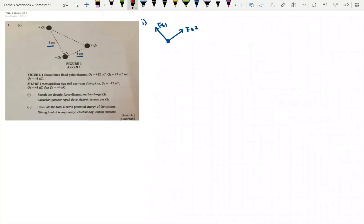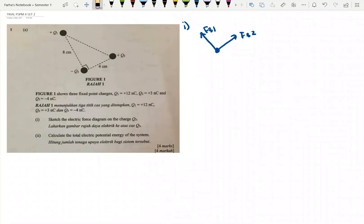The marks for this question: correct label and arrow for each force F31 and arrow is 1 mark, F32 and arrow is 1 mark, total diagram 2 marks. Now let's look at question A2: calculate the total electric potential energy of the system.